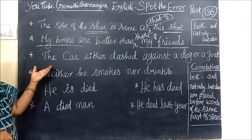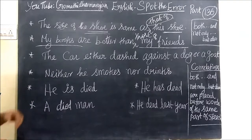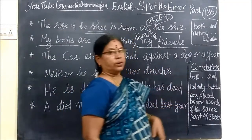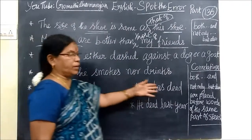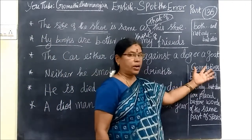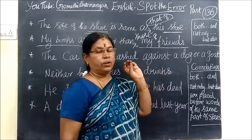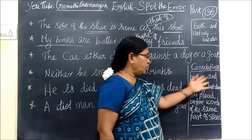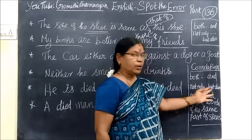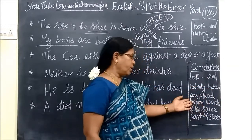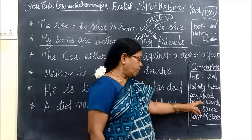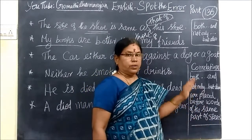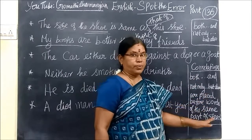Come to the next one. The car either dashed against a dog or a court. This is the correlative area. Neither/nor, either/or, both/and, not only/but also — these are the correlatives. They are placed before words of the same part of speech.